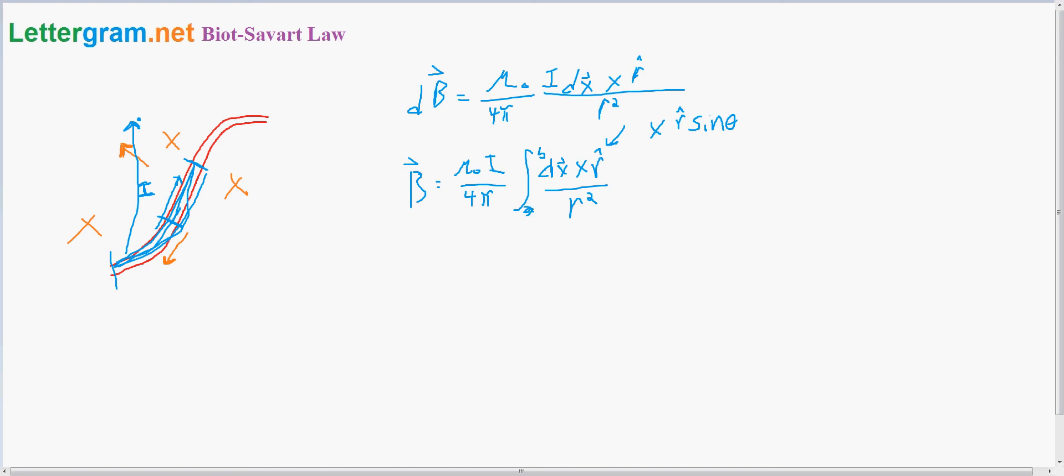Actually, this should be A to B. And essentially that's what you do to get this side, and then if you want this side, you do the same thing. What that basically gives you is the magnetic field generated by this current.